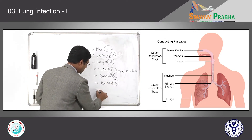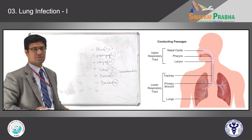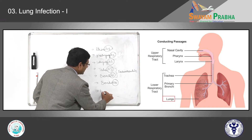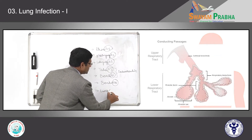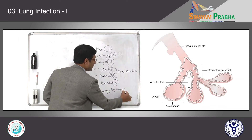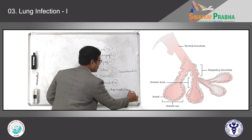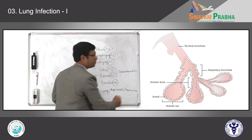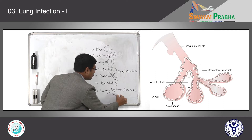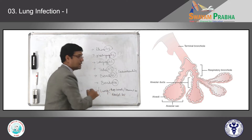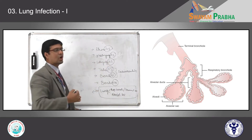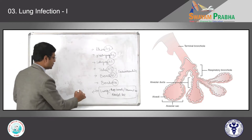Any kind of infection or inflammation present in the lung — involving the respiratory bronchioles, terminal bronchioles, and the alveolar sac — when inflammation is limited to these structures, we commonly in layman's terminology call it pneumonia.